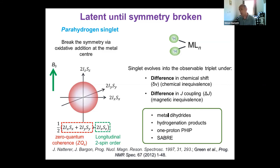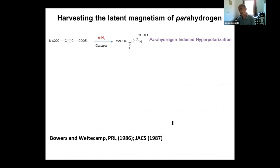We can achieve this difference in two hydrides in our metal product by designing the complex appropriately. We've seen already that we can create hydrogenation products. One thing that hasn't been talked about earlier was the concept of one-proton fit, put forward by Rich Eisenberg — that is when a single proton derived from parahydrogen can become enhanced. We've already learned a little bit about SABER, which I'm going to continue to explain.